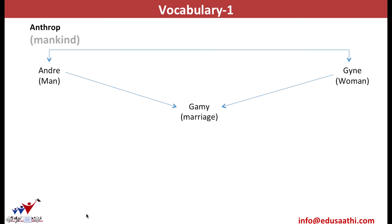Men and women are married, and the word root for marriage is 'gamy.' Thus, any word that has gamy as a root will certainly have some relation to weddings. We all are aware of the concept of marrying multiple times — this practice is known as polygamy. Because poly means many and gamy means marriages, thus polygamy is the practice of marrying multiple times.